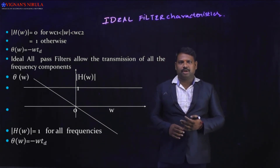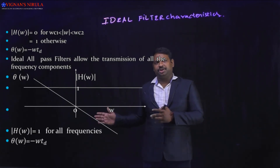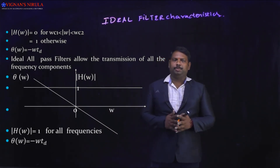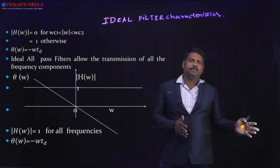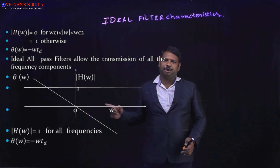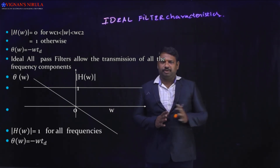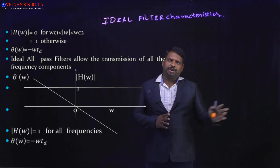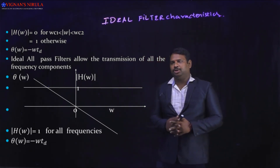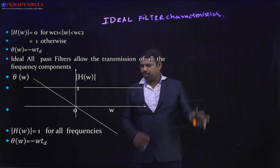Next is the all-pass filter, which allows all frequency components from minus infinity to plus infinity — all frequencies will be passed. The magnitude spectrum is a constant value from minus infinity to plus infinity, and the phase spectrum is a linear spectrum: positive frequencies yield negative phase and negative frequencies yield positive phase. The equations are: |H(ω)| = 1 for all frequencies, and θ(ω) = −ω·t_d.